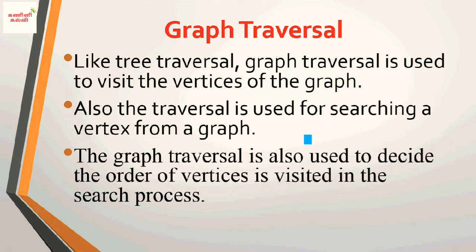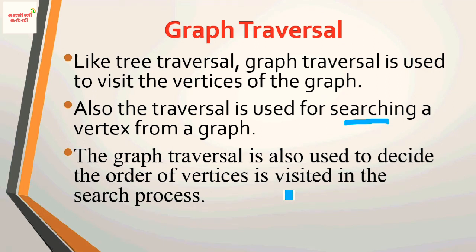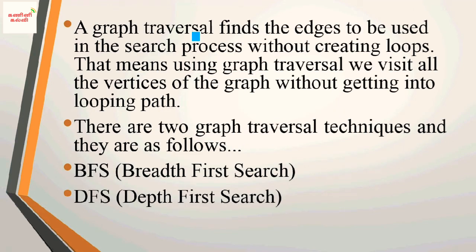Graph traversal is also used to decide the order in which vertices are visited in the search process. A graph traversal finds the edges to be used in the search process. The edges are used to visit every vertex without creating loops. This is one important point — using graph traversal, we visit all the vertices of the graph without getting into a looping path.